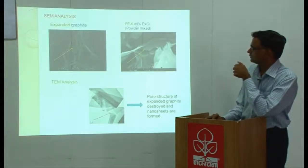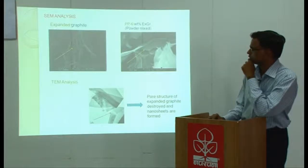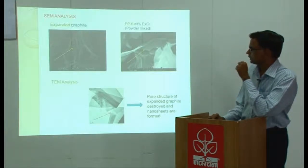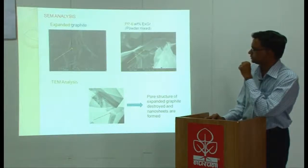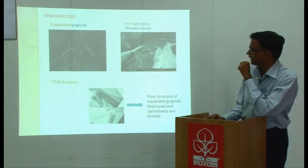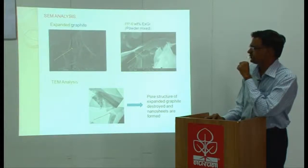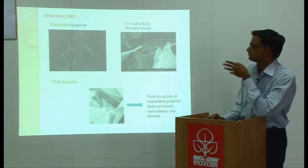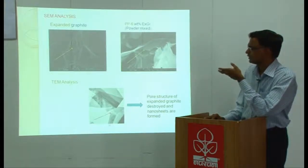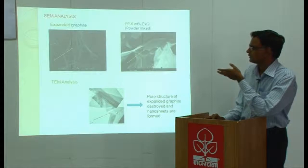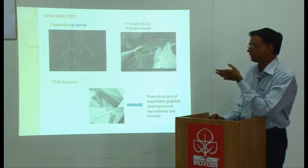When you take the transmission electron microscopic picture, we can very easily see the porous structure of expanded graphite has been broken and we get very thin nanosheets. I would say these are graphite nanosheets because this is black in color. When you go over here the sheets are somewhat transparent.